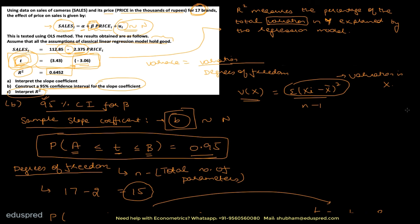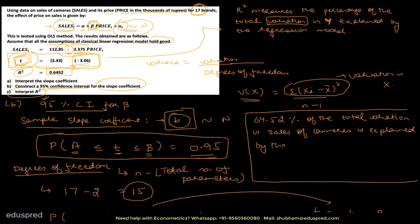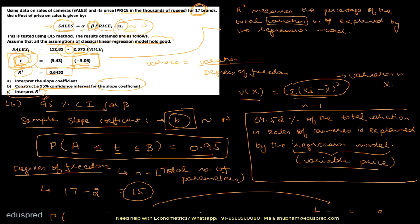So the interpretation is: 64.52% of the total variation in sales of cameras is explained by the regression model. Since there is only one independent variable on the right-hand side, you can also say it is explained by the variable price. If there were multiple independent variables, it would be better to write 'explained by the regression model.'